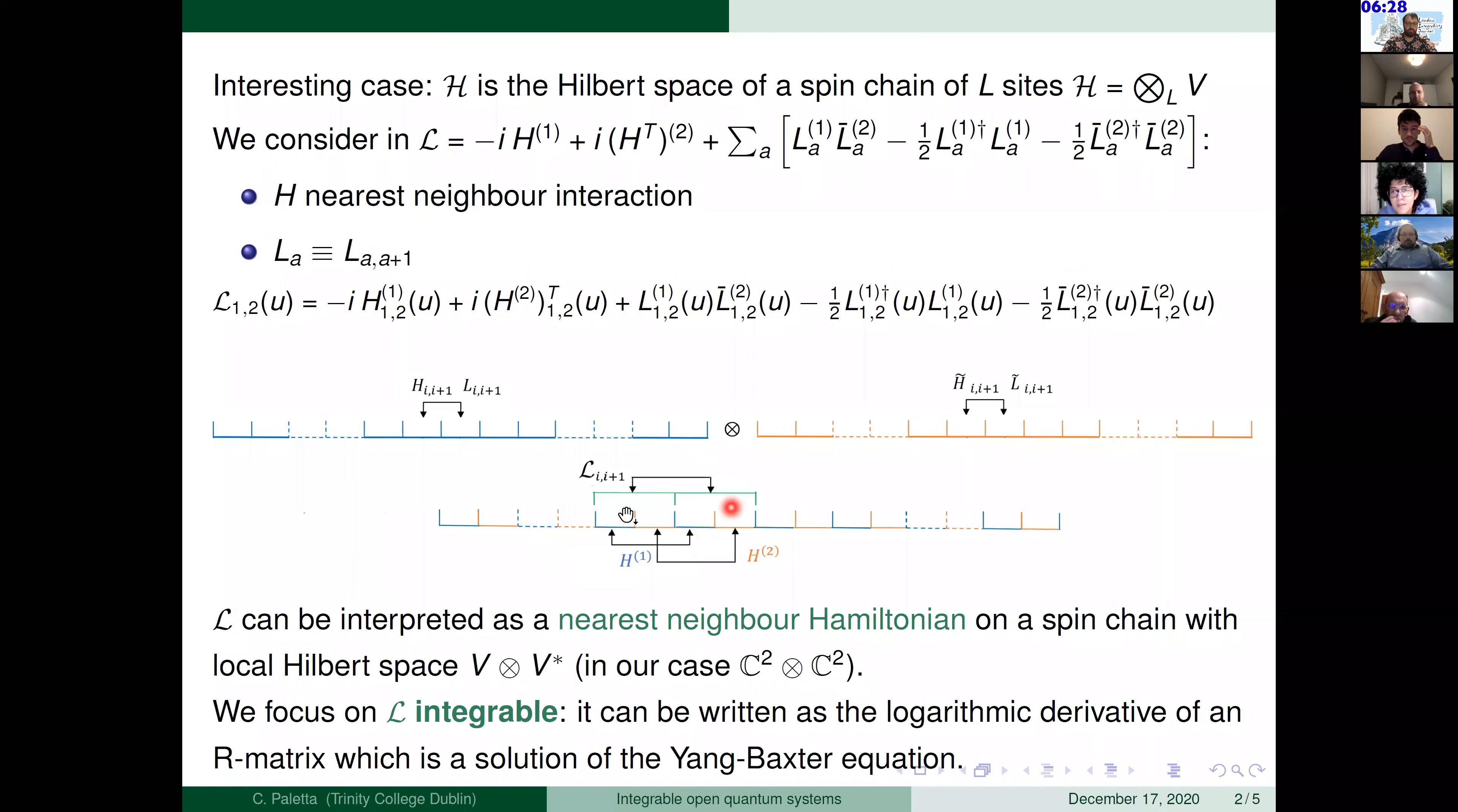Here I put this picture just to help a bit the understanding. So we start from two chains. The first one with local Hilbert space V. This one with local Hilbert space V tilde. And we construct this new chain and the local Hilbert space is this one. In particular in our case is C² times C². Having in mind all this construction we can start to work out our problem that will be to focus on the case where this super operator is integrable. That means it can be written as the logarithmic derivative of an R matrix that is a solution of the Yang-Baxter equation.